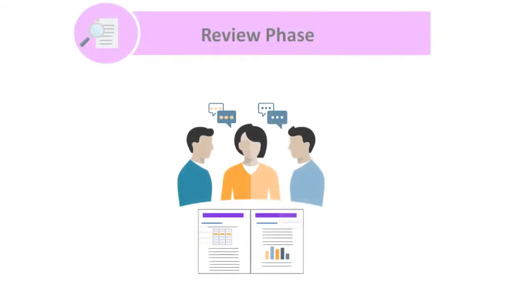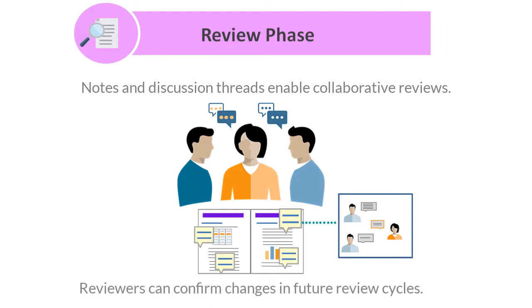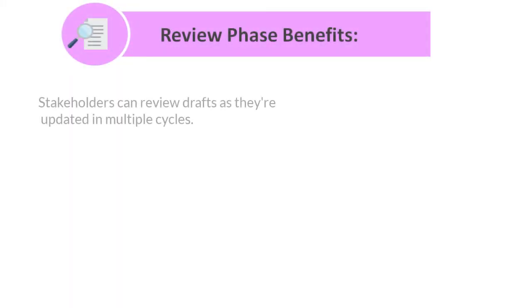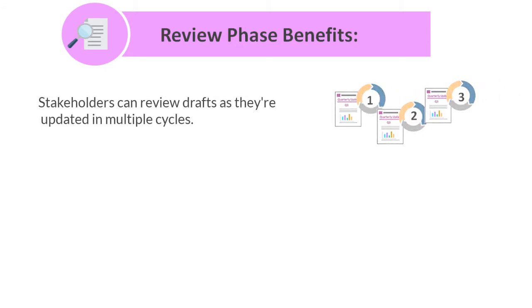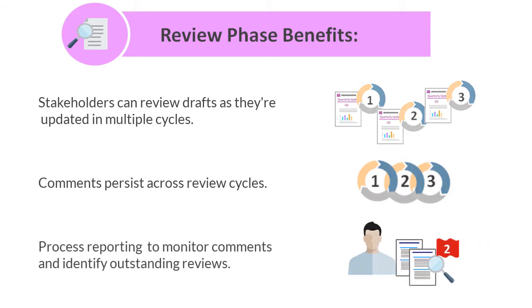In the review phase, users can use notes and discussion threads to jointly evaluate and vet their assigned content and request changes. Owners and authors respond to these comments as appropriate. Reviewers can confirm that these changes are being made in future review cycles. Stakeholders can review updated drafts in multiple review cycles — for example, managers can review a first draft, executives the second, and top-level management the third. Review comments persist across review cycles, enabling you to see how comments are addressed, and process reporting helps you monitor outstanding reviews.